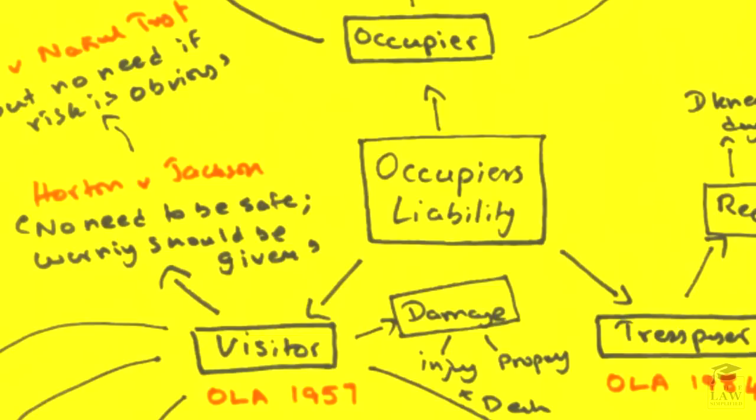An important factor to note, moving on to our next segment, is that Occupier's Liability is based on two specific groups of people. On the one hand you have the visitor, a person who has come into the property with permission. Both types of individuals are important to consider and are governed by two individual Acts. A visitor is considered under the Occupier's Liability Act of 1957, and a trespasser is considered under the Occupier's Liability Act of 1984.